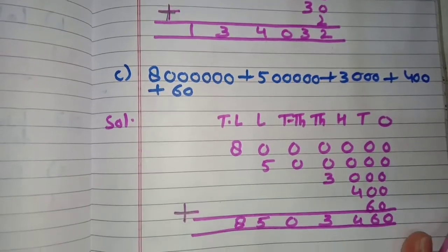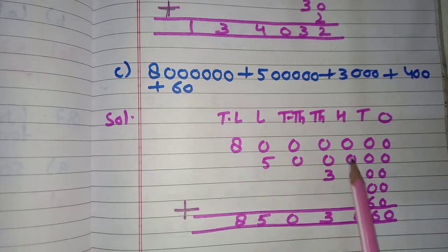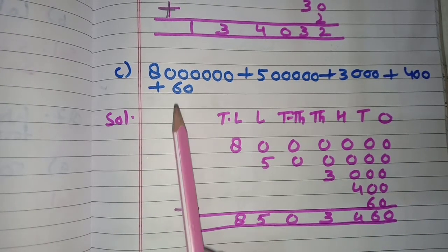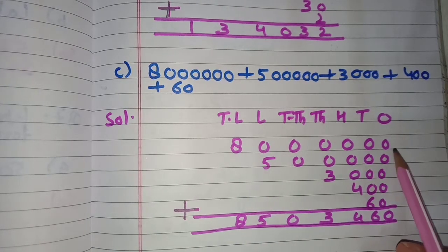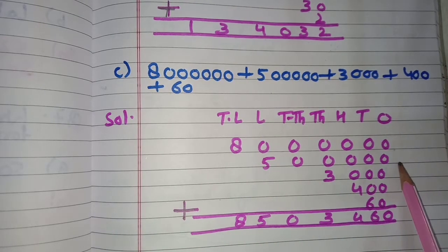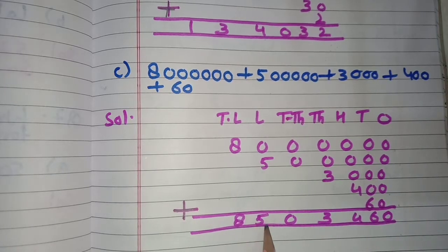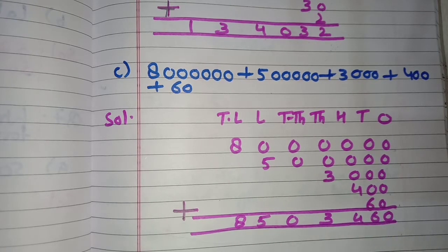Part C: an expanded form is again given. Write the place values and then start adding from the ones place. The values are 80 lakh, 5 lakh, 3,000, 400, and 60. The short form is eighty-five lakh, three thousand, four hundred and sixty. I hope you have understood this exercise. Thank you.